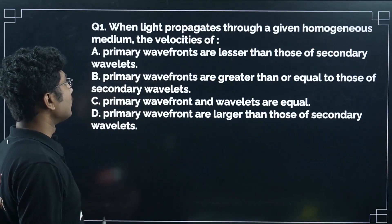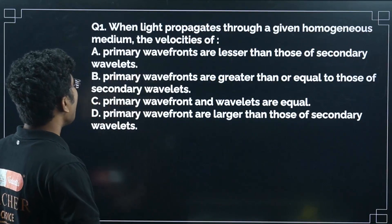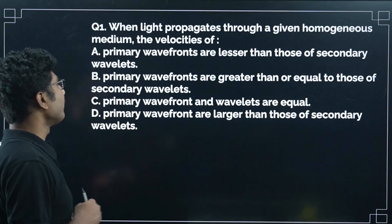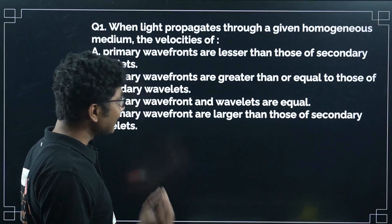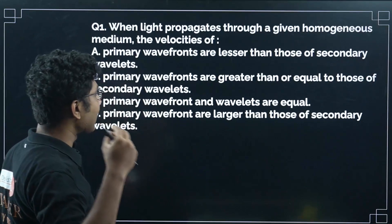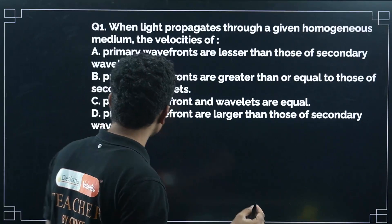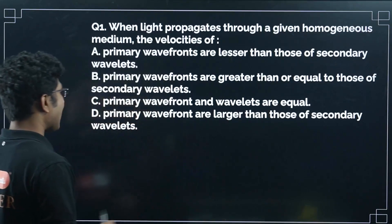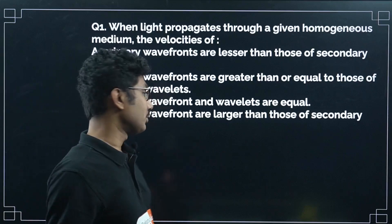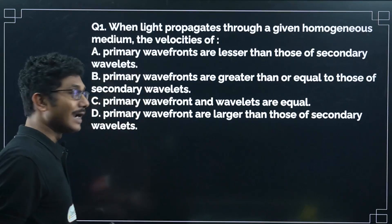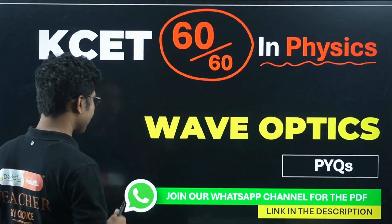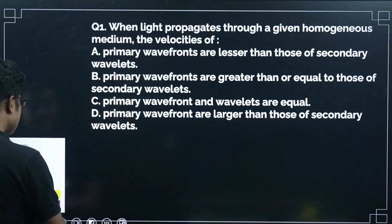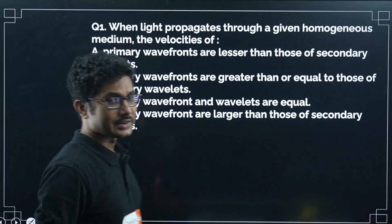Let us start solving wave optics PYQs. First question: when light propagates through a given homogeneous medium, the velocities of primary wavefronts compared to secondary wavelets — we have discussed that secondary wavelets move with the same speed as the primary wavefront. So option C is the correct answer.